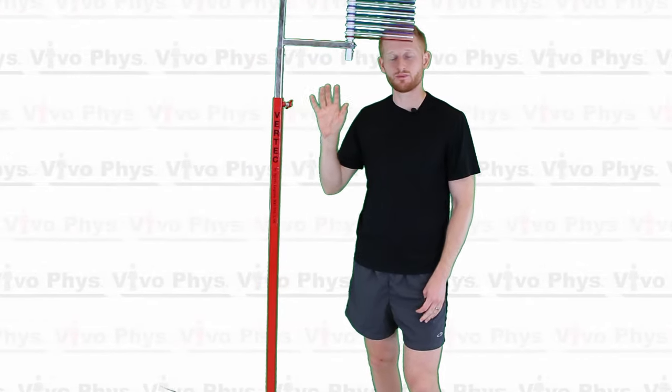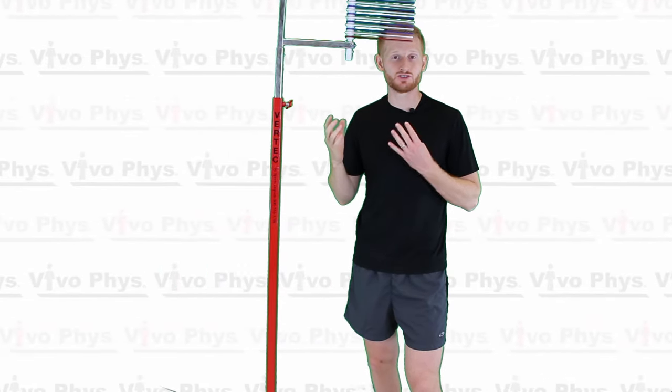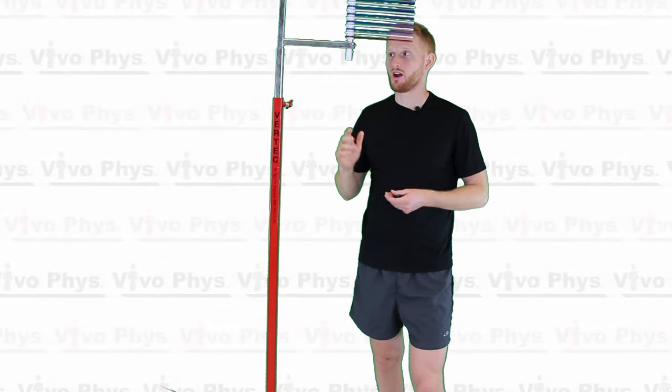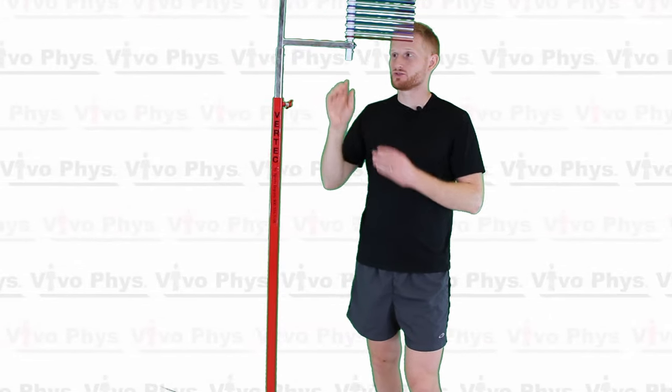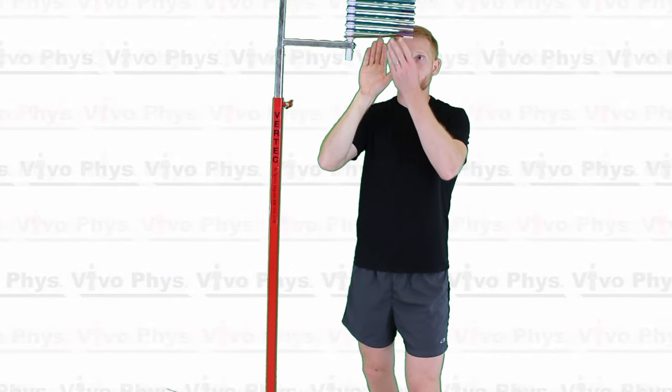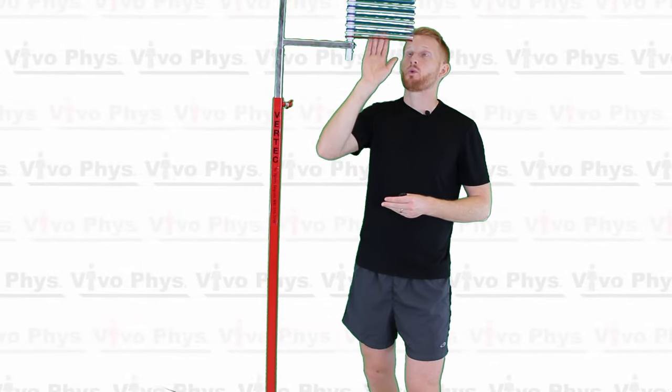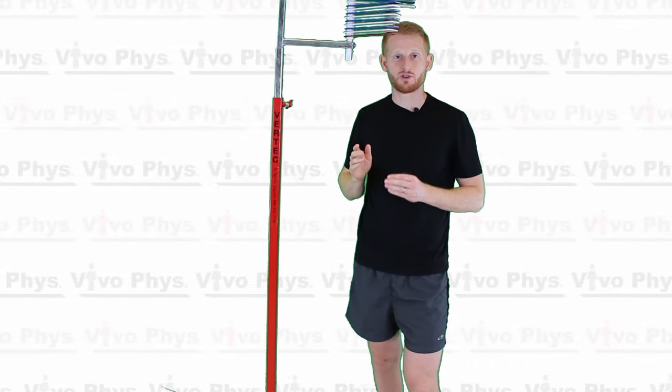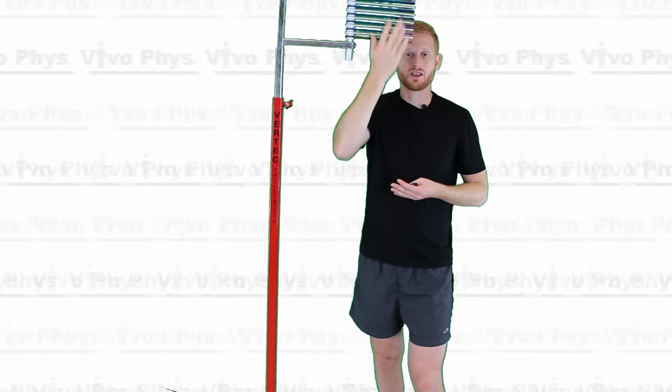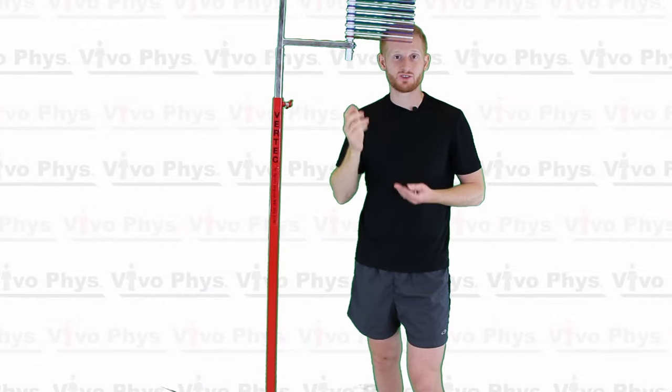When using a Vertec, there's a couple different ways of dealing with standing reach height when you're trying to calculate jump height - so how far somebody actually goes from the ground up into the air. One of those is to raise this so that the bottom flag here is at the level of the reach height. So you raise it until they can just barely touch that, and then wherever they jump and smack, all of those flags then represent actual jump height. The other way of doing it is to simply measure their reach height, then measure their jump height and do the subtraction of the two.